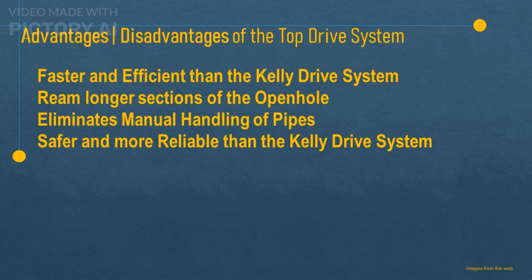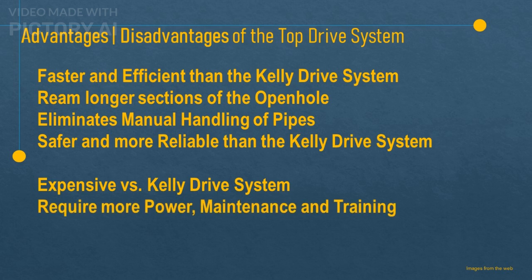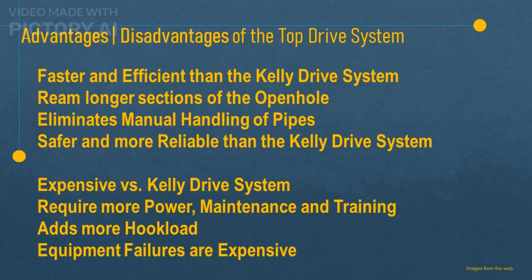A disadvantage of the top drive system is that it is more expensive than a conventional system. It requires more power, maintenance, and training to operate. It also adds more weight to the hook load, which can limit the depth that can be drilled with a given rig. Another disadvantage is that it can be more prone to failures or malfunctions — if the top drive breaks down or gets stuck, it can cause delays or complications in drilling or tripping operations.